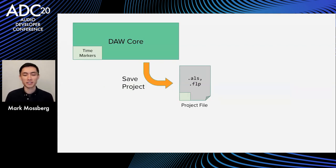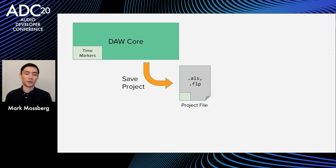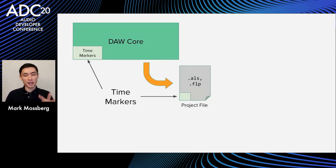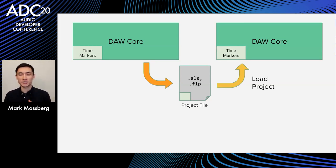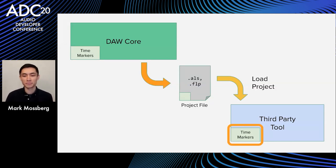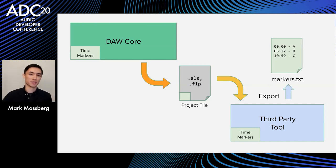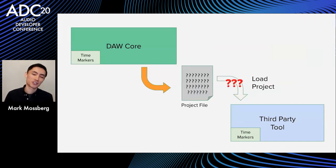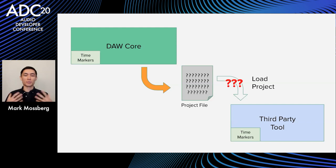Here's another approach: what if we approach this from the project file perspective? DAWs need to serialize their entire state into a project file so users can open it later. Part of that serialized state is going to be the time markers. What if we could build our own third-party tool that could also load these projects, including those time markers? If we can do this, our tool can do whatever we want — like export them to plain text. The question is how do we do this, since these files are proprietary and undocumented. That's where we get into reverse engineering.